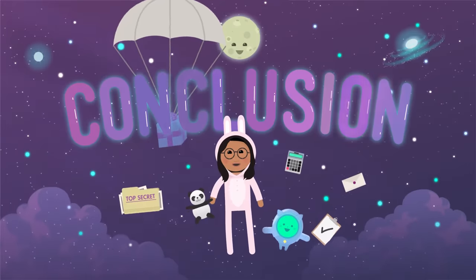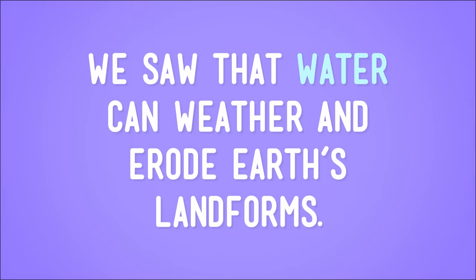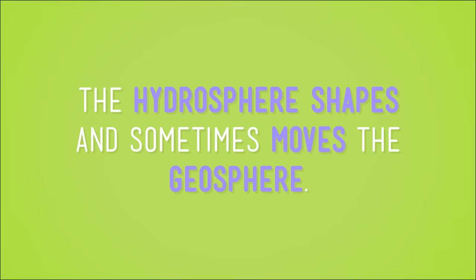So, what can we take away from this? We saw that water can weather and erode Earth's landforms, and that's just one example. There are so many others, like floods weathering valleys or glaciers eroding mountains. The hydrosphere shapes, and sometimes moves, the geosphere. One last joke before I sign off: what did the geosphere say to the hydrosphere? You crack me up.